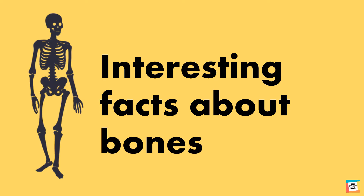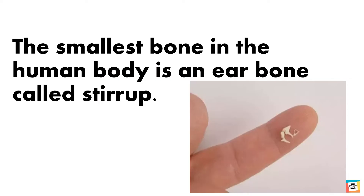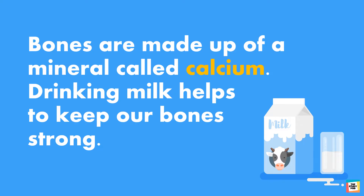Let's discuss some interesting facts about bones. Do you know that the smallest bone in the human body is an ear bone? It is called the stirrup. Bones are made up of a mineral called calcium, and drinking milk helps to keep our bones strong.